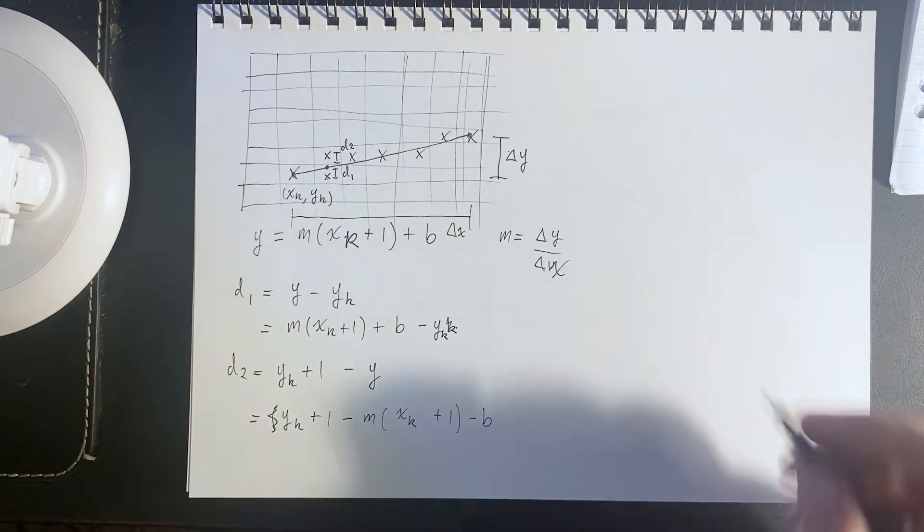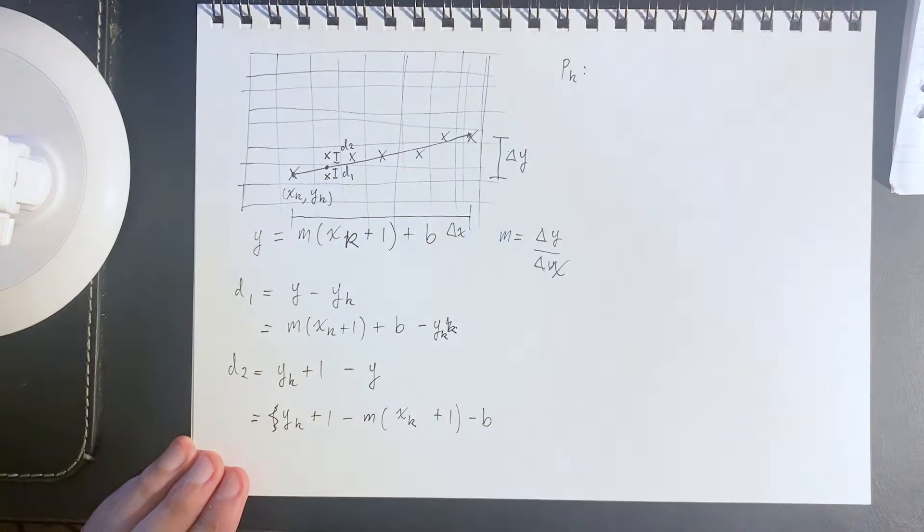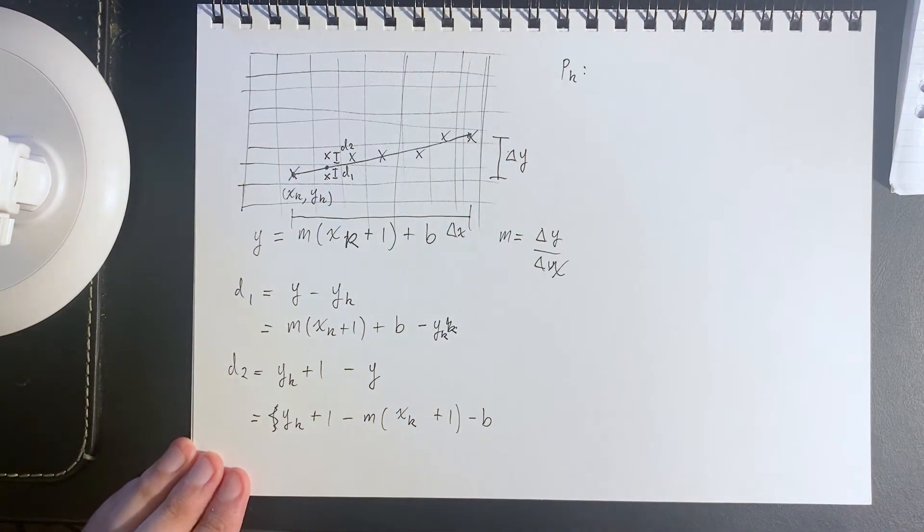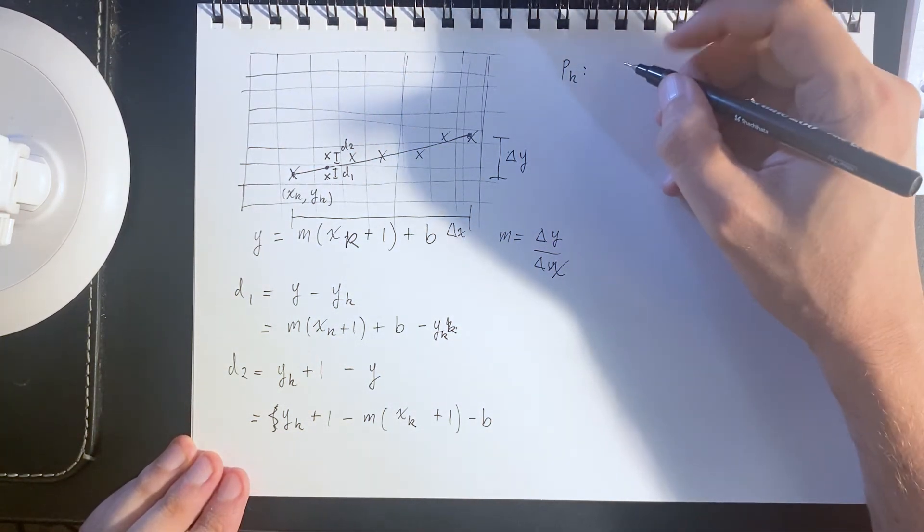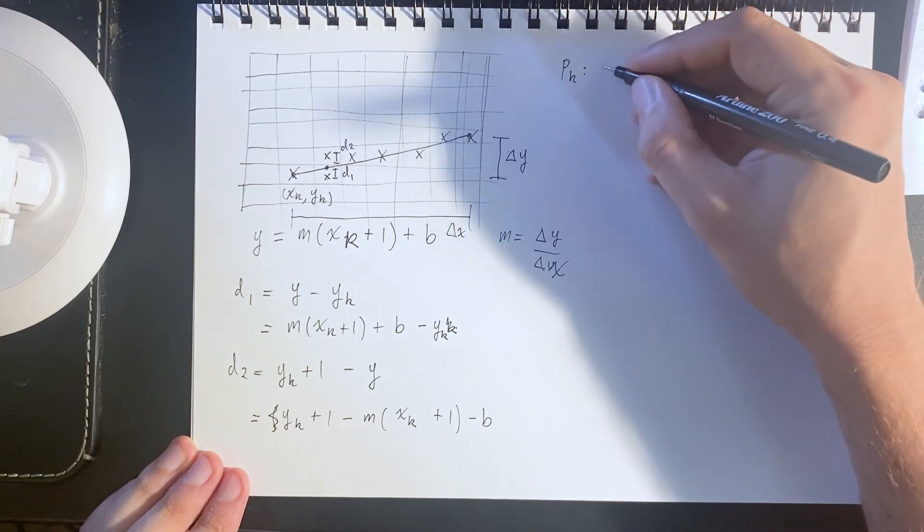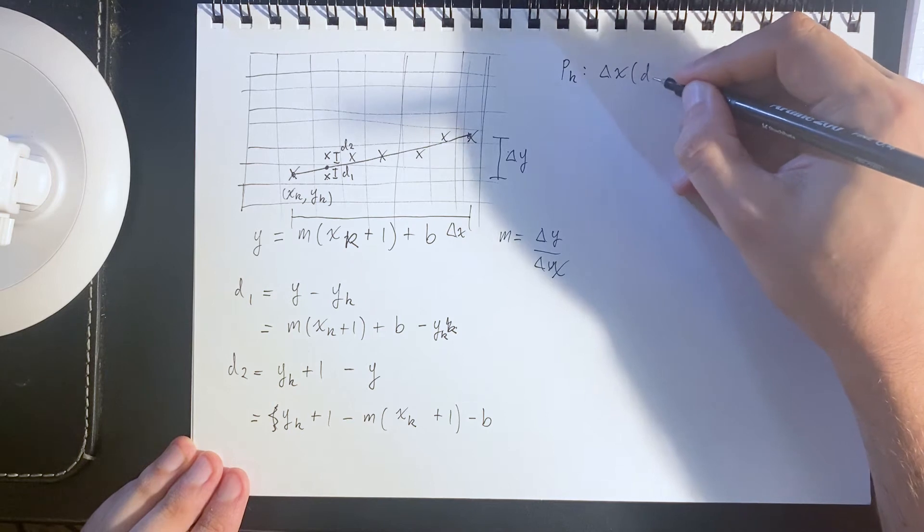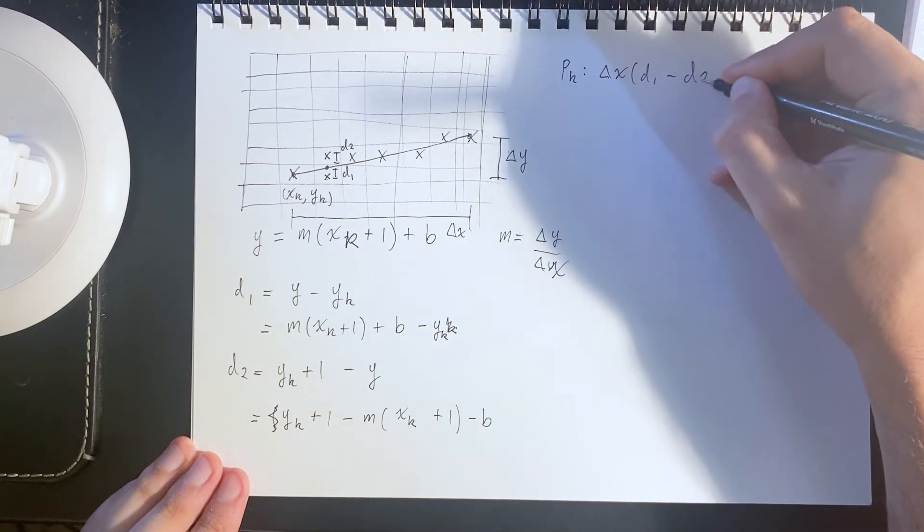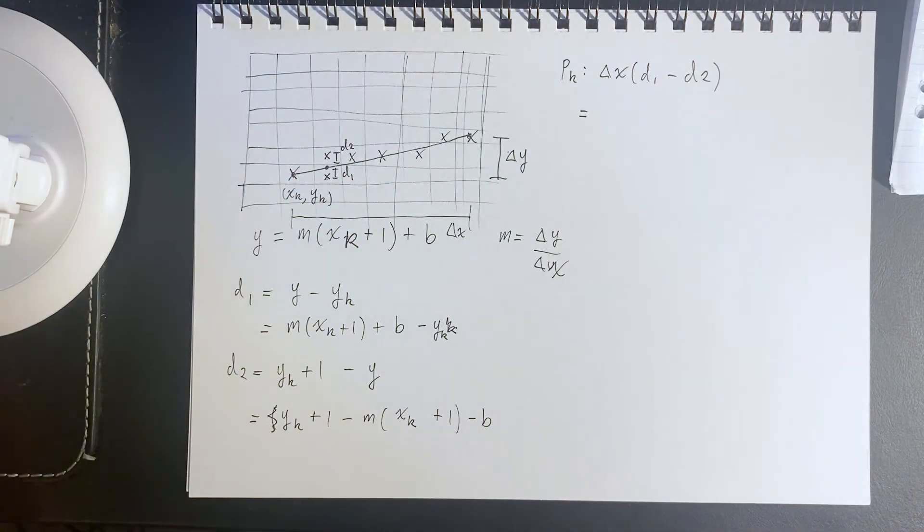We can also define a decision parameter for each point, looking at the next point. That is basically delta x times d1 minus d2, and I'll show why this is important.